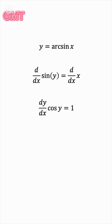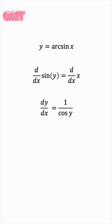We can now solve for dy/dx by dividing both sides by cosine y. And now we're pretty much done, except we want this to be a function of x only — we don't want to see any y's on the right-hand side of this equation.